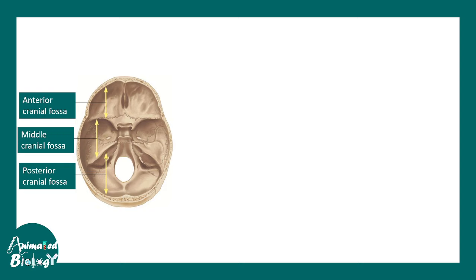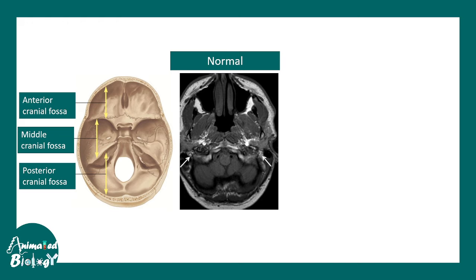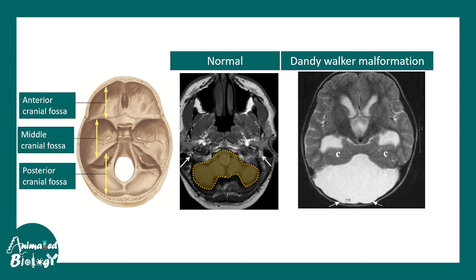The skull has an anterior cranial fossa, medial, and posterior cranial fossa. In Dandy Walker malformation, the posterior cranial fossa is defective. Comparing a normal MRI to a Dandy Walker MRI, you can see the overall cerebellum and observe that the posterior fossa becomes much thinner. The central part of the cerebellum is most affected — the vermis area is the one most impacted — and this is how the fluid accumulation appears.